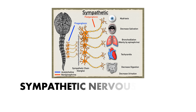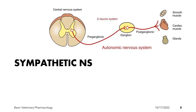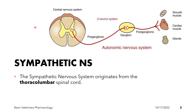Welcome to our lecture on the sympathetic nervous system. The sympathetic nervous system is a motor division of the autonomic nervous system. The sympathetic nervous system originates from the thoracolumbar portion of the spinal cord.